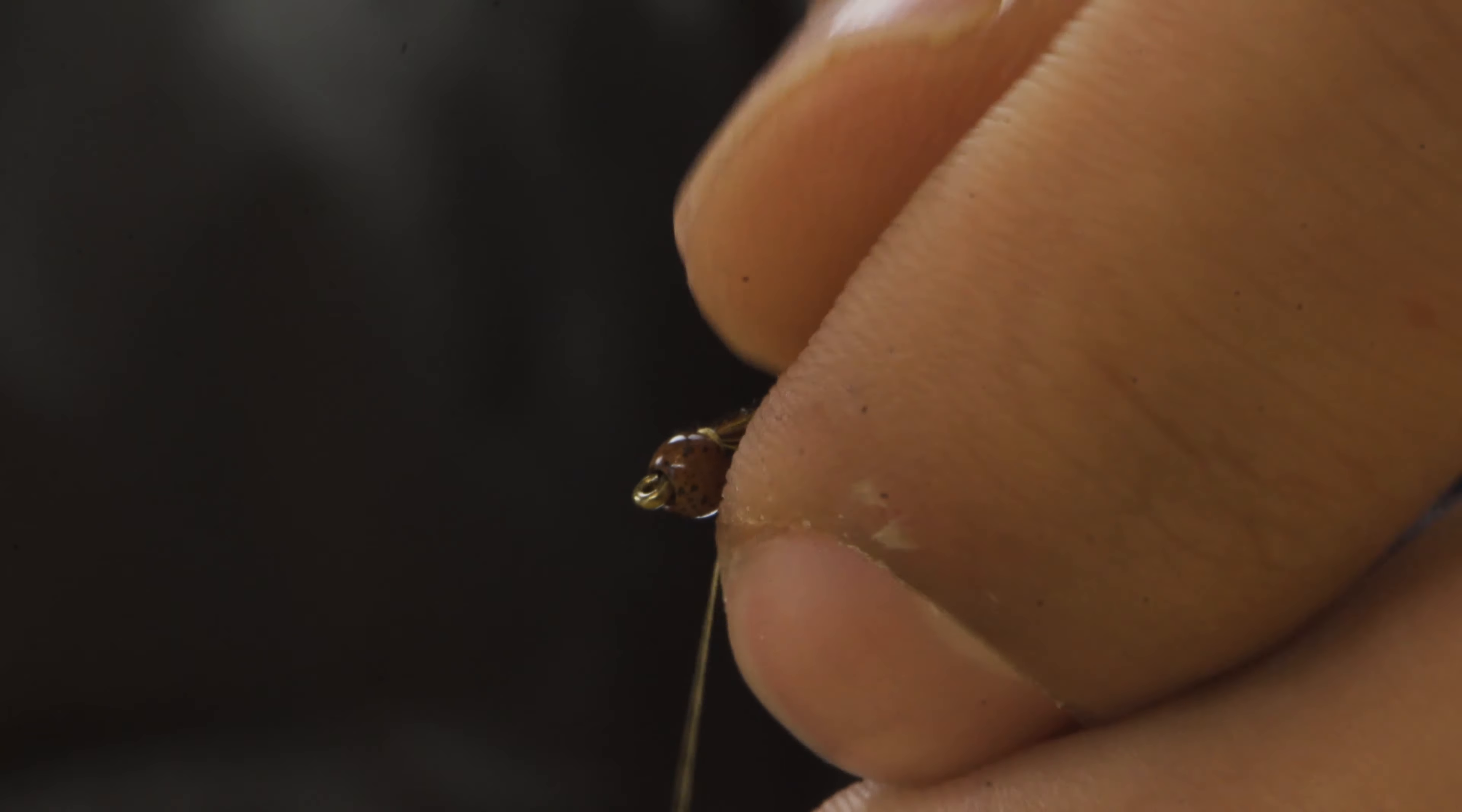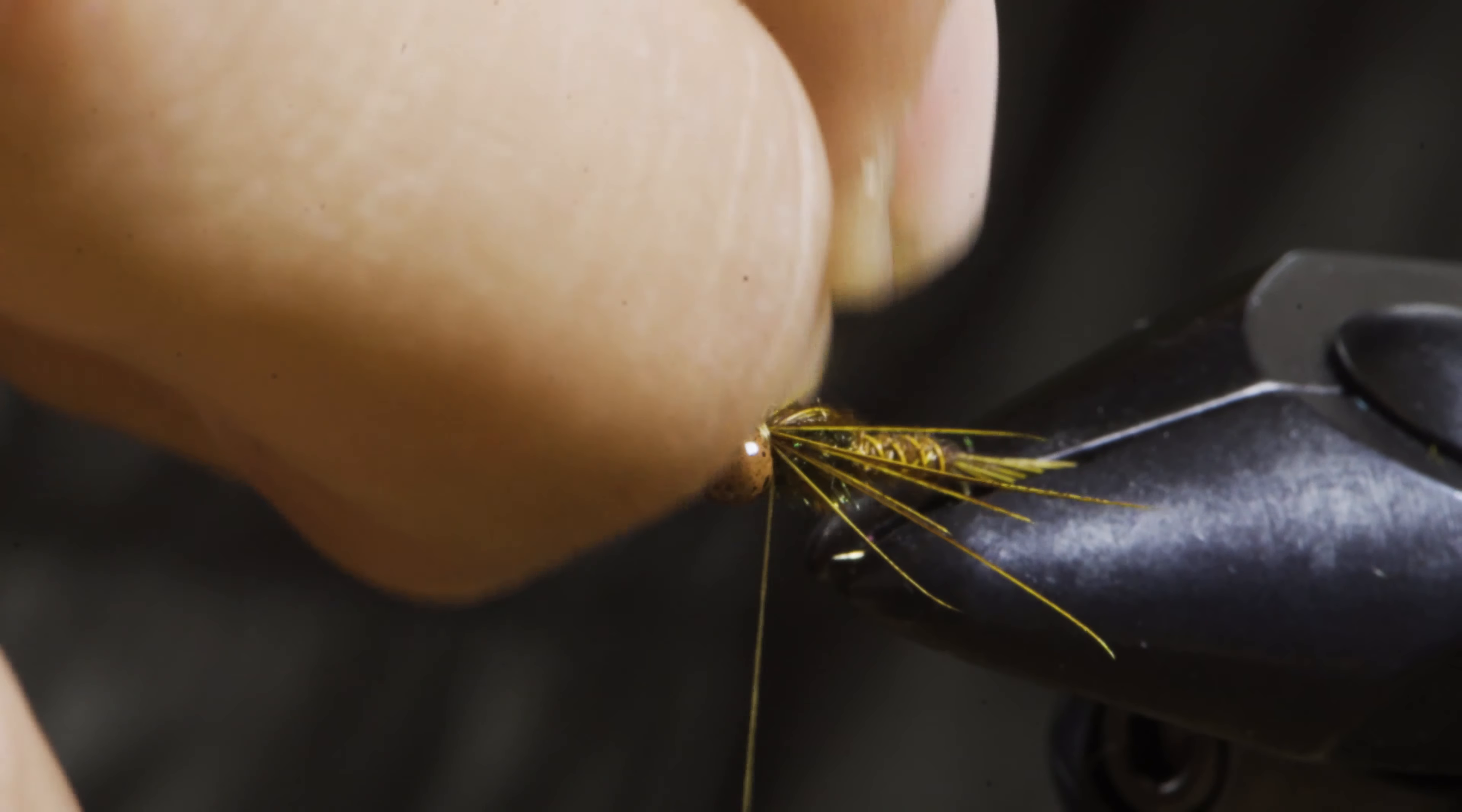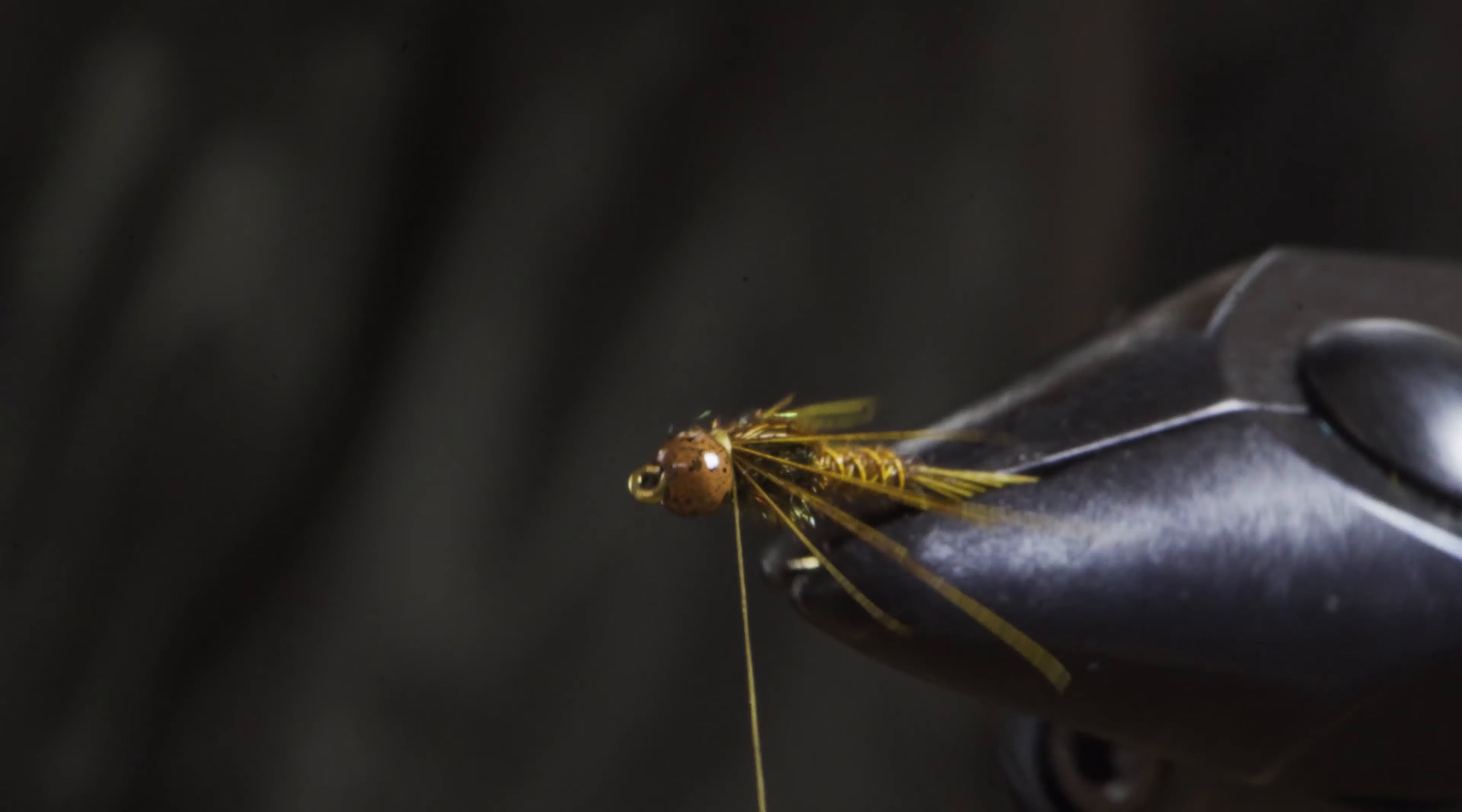So once we have those separated and split to the sides, I'm just going to kind of pull those tails around where I want them. Again, it doesn't make a whole lot of difference to the fish and clean this up a little bit.